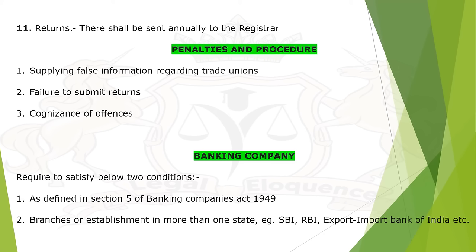Banking Company: required to satisfy the following two conditions — as defined in Section 5 of Banking Companies Act 1949, and branches or establishment in more than one state. Examples: SBI, RBI, Export-Import Bank of India, etc. These are called Banking Companies.